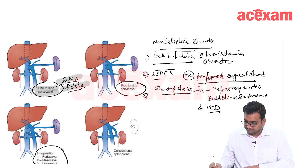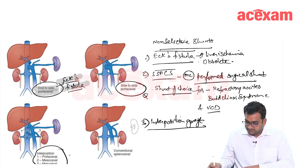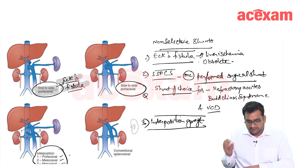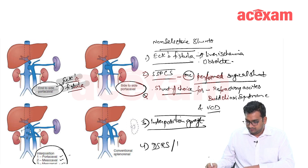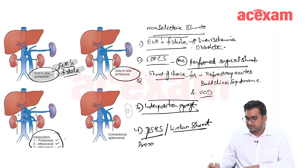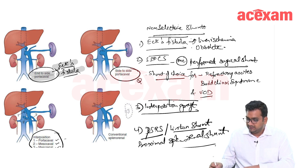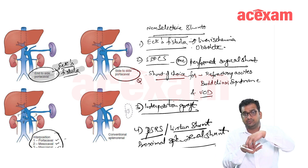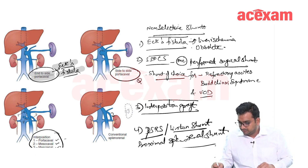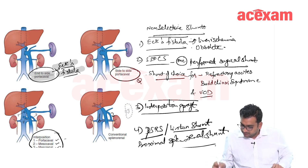The third type is the interposition graft, which can be of three types: portocaval, mesocaval, and mesorenal. The fourth type is the proximal splenorenal shunt (PSRS), also known as the Linton shunt. In PSRS, we perform a splenectomy and anastomose the splenic vein to the renal vein. The portal blood flows through the splenic vein into the renal vein and then to the IVC. So PSRS is also a type of non-selective shunt.